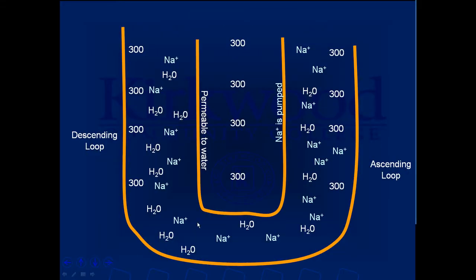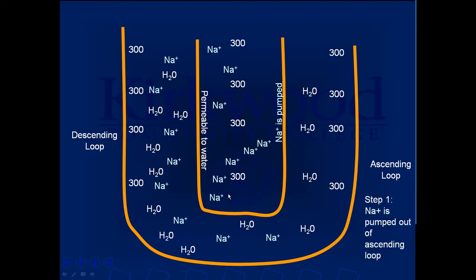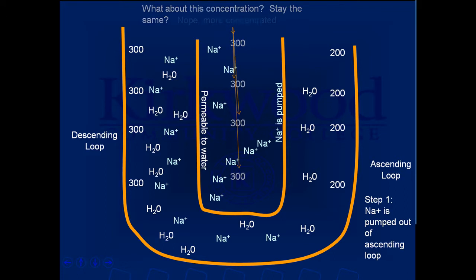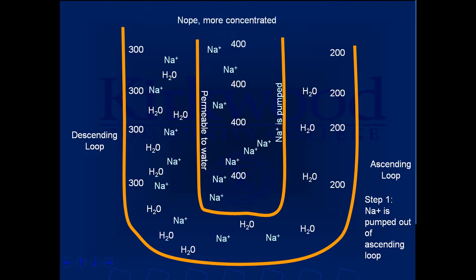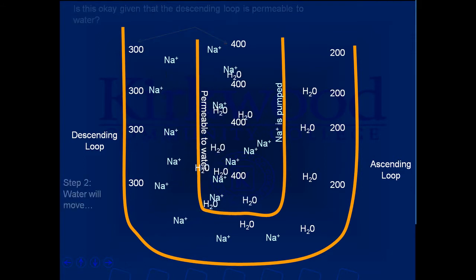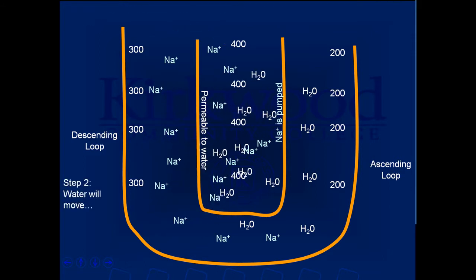One of the most difficult things to find an animation for is something called countercurrent multiplication in the loop of Henle. I'm definitely not very good at this animation yet, but I see the potential for generating animations to help students understand things in a movement-type fashion. It's very difficult to explain countercurrent multiplication to students, so animations are generally nice — but they're awfully hard to find on the web.